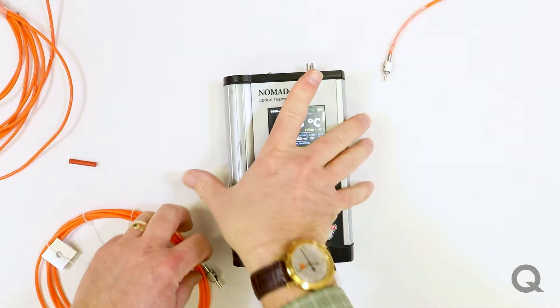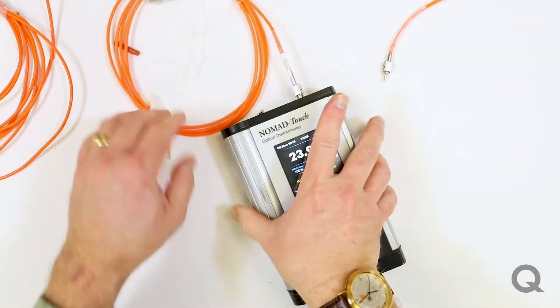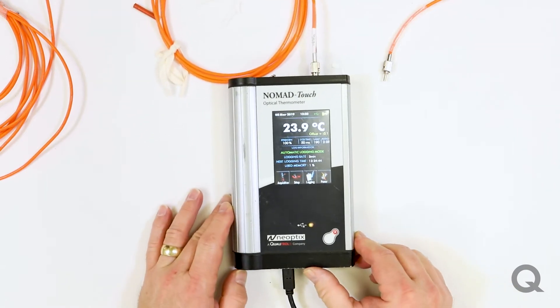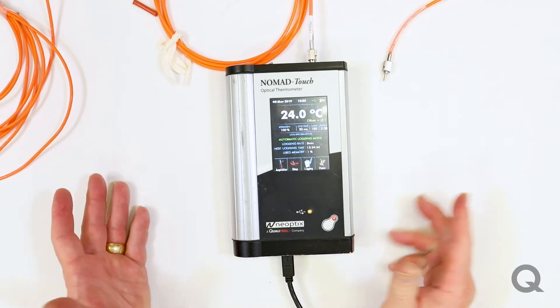If I put a new fiber on, then my signal strength ends up at 100 percent. Temperature is still the same.